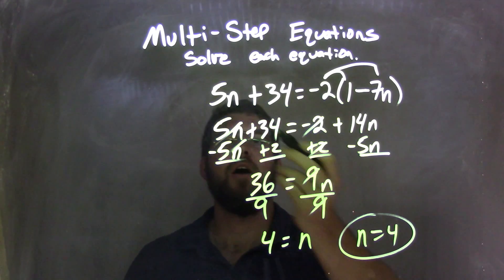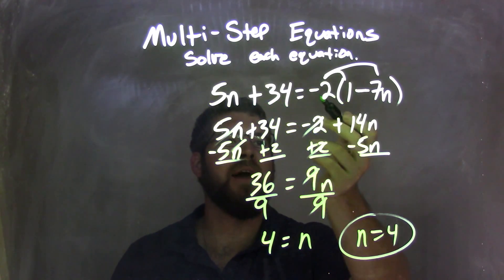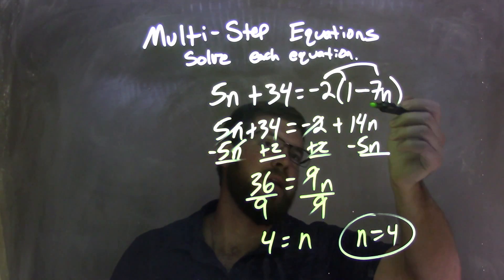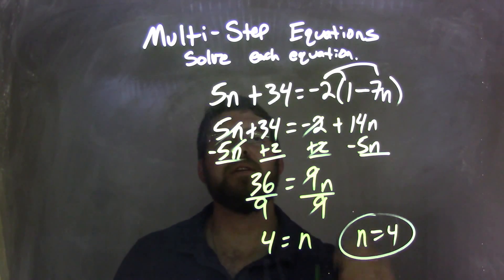So, let's recap. 5n plus 34 equals negative 2 parentheses 1 minus 7n. Distributed the negative 2 across, negative 2 times 1 is negative 2. Negative 2 times a negative 7n, it's a positive 14n.